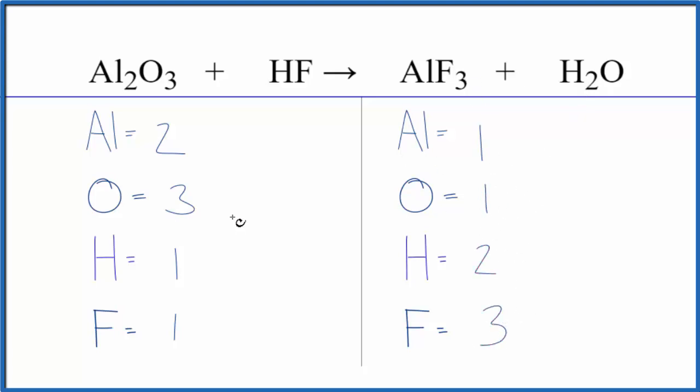Let's leave the oxygen to last and start with the aluminum. We could put a 2 in front of the AlF3. So 1 times 2, that would give us 2. Balance the aluminum.